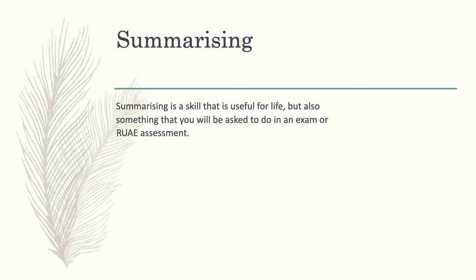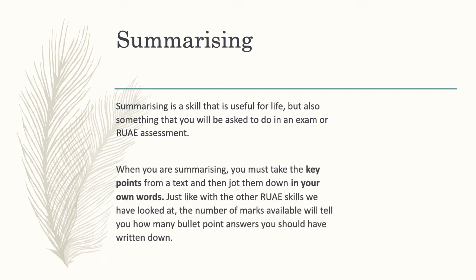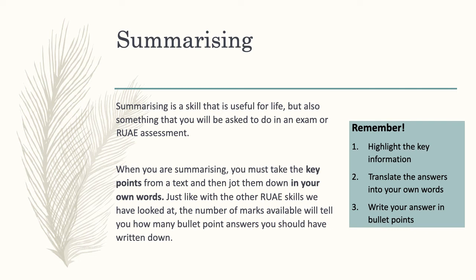On to summarising. Again, summarising is a very useful skill for life in general, but something we'll be asked to do in a RUI assessment. When summarising, remember you're only taking the key points from what you've read and jotting them down in your own words. Part of the key skill is identifying the most important bits of information from any given text. Just like with any other RUI skill, be aware of the number of marks as that tells you how many bullet points you're looking for. Highlight the key information, translate things into your own words, and write your answers in bullet point form.